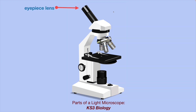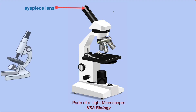The top has the eyepiece lens — it's right in the name. You put your eye here to look through to see your sample. Some microscopes look a little different. This is the body tube; on the left, it's a little more clear.